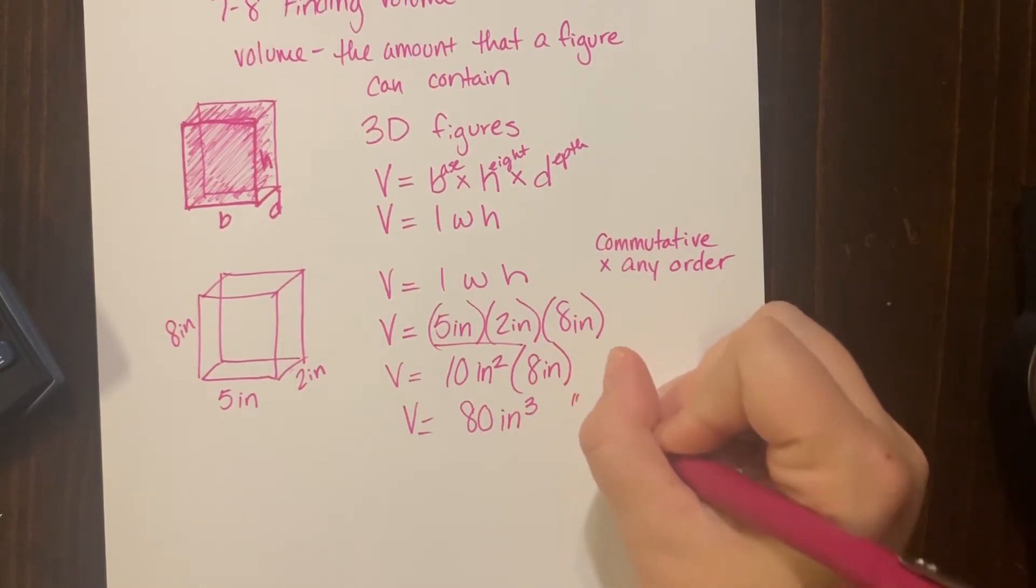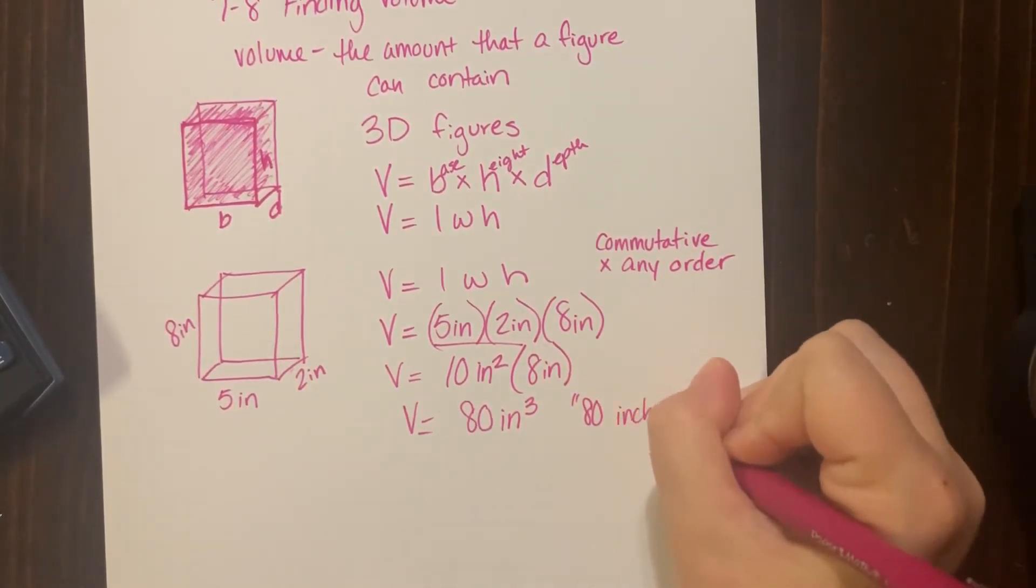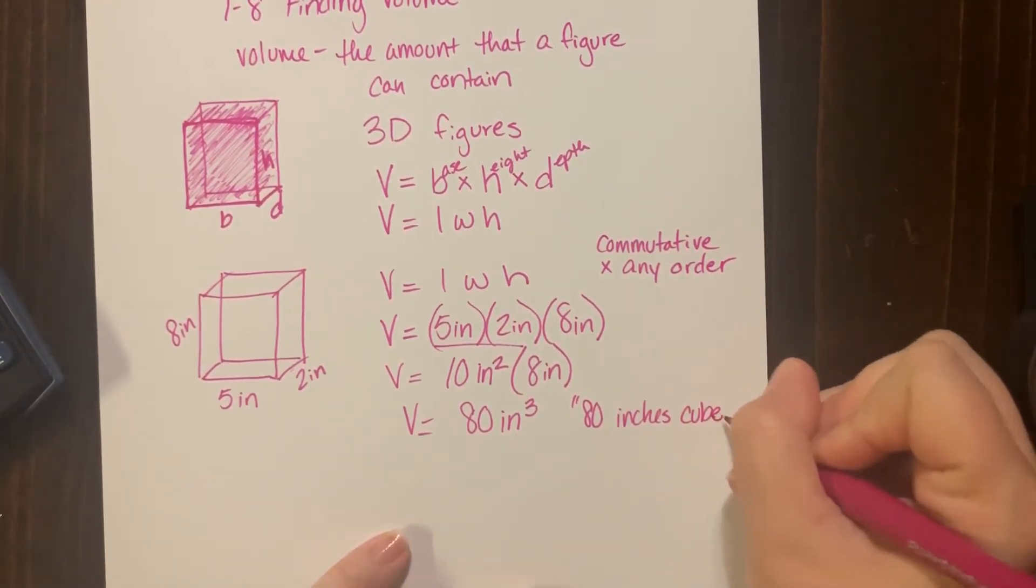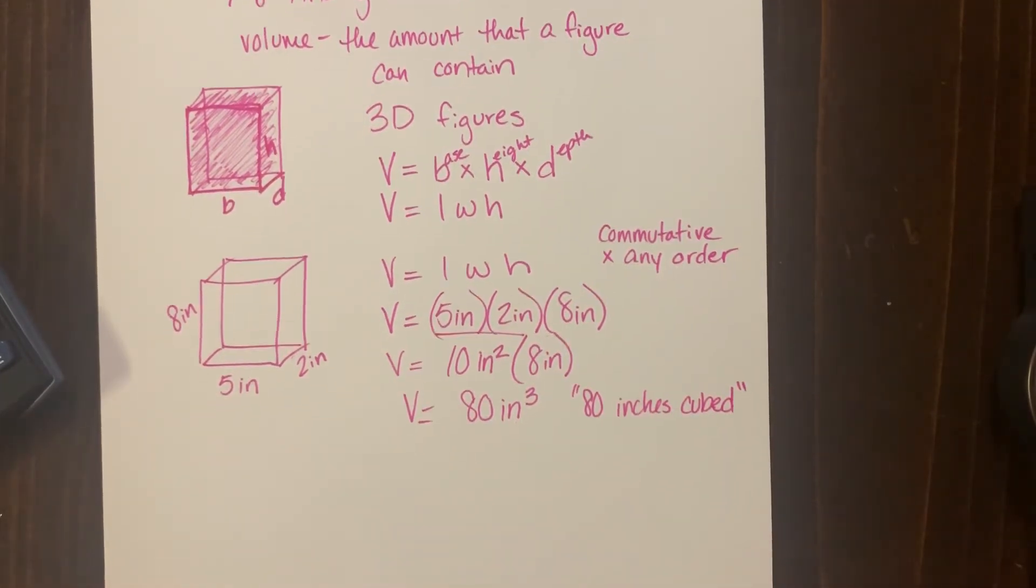All right, so we're always going to say—this is how you say it—I'm going to put 80 inches cubed. All right, you can also switch this around and say cubed inches. That's fine, but you have to say cubed. That's the key.